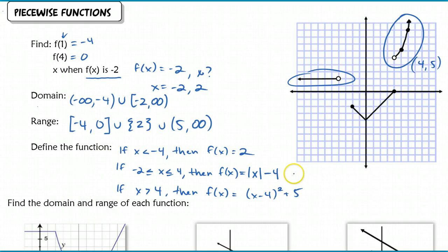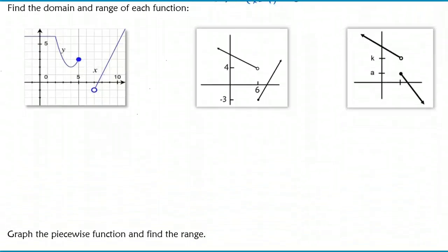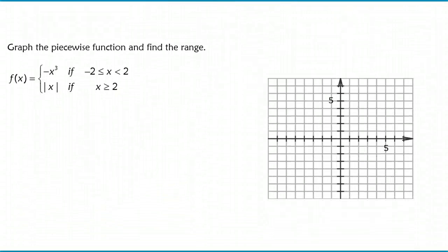If you weren't able to see why I'm getting these points, that's all right - we're going to talk more about translations in section 3-4 after your quiz, and we'll do a lot more examples so you can write these equations quickly. Now, to find the domain and range of these functions, I'd like you to pause, try these, and then check with the key. I'll finish off by graphing a piecewise function.